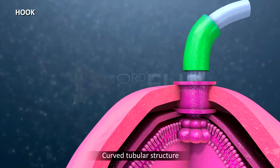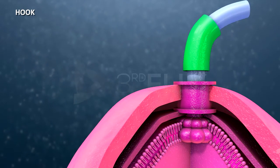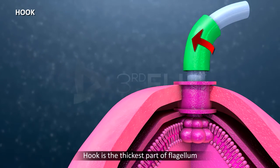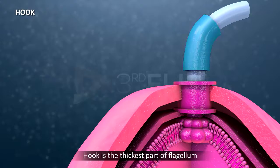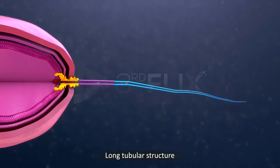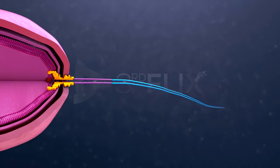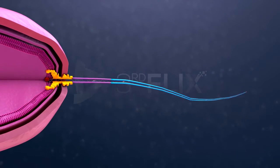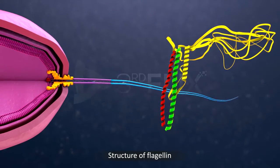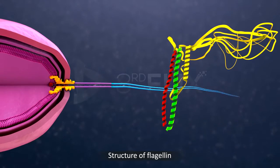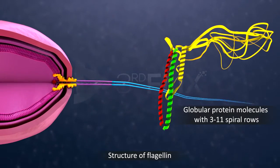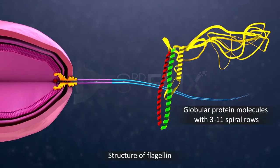The hook is a curved tubular structure which connects the filament with the basal body, and it is the thickest part of the flagellum. The filament is a long tubular structure which causes turbulence in the liquid medium. It is made of a protein called flagellin. The protein molecules are globular and occur in three-to-a-level spiral rows.